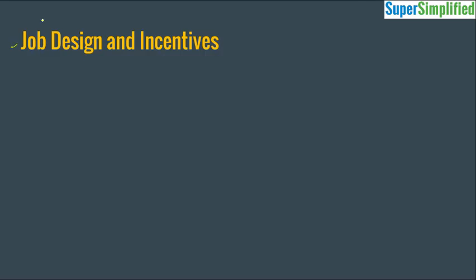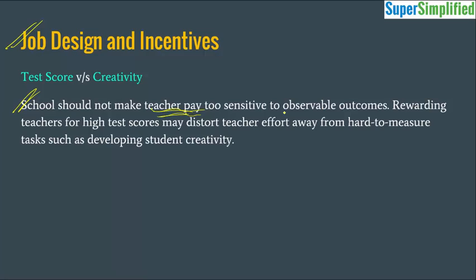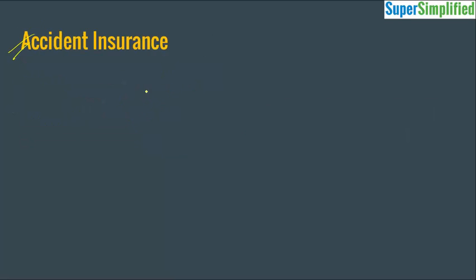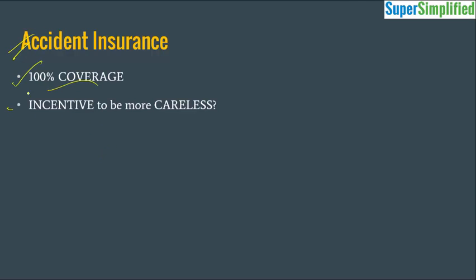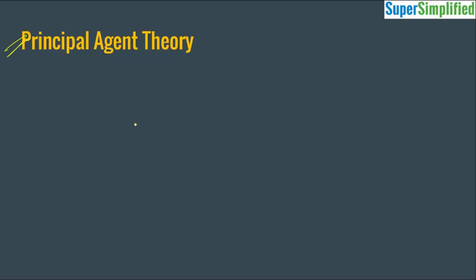Now let's look at some practical case studies. In job design and incentives: in schools, if teacher pay is too sensitive to observable outcomes — for example, rewarding teachers for high test scores — their effort towards hard-to-measure tasks such as developing student creativity will decline. The contract should be designed to give equal emphasis to non-measurable aspects. This is a problem with the Indian education system as well. Similarly, providing 100% coverage in accident insurance is an incentive to be more careless — that's why there are concepts of deductibles and co-payments.